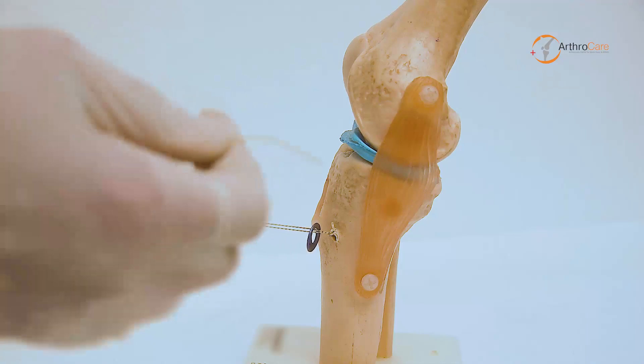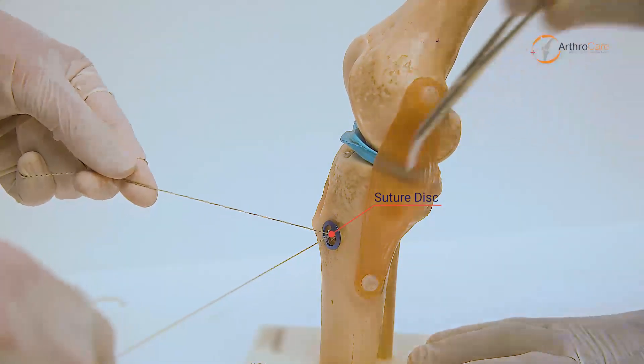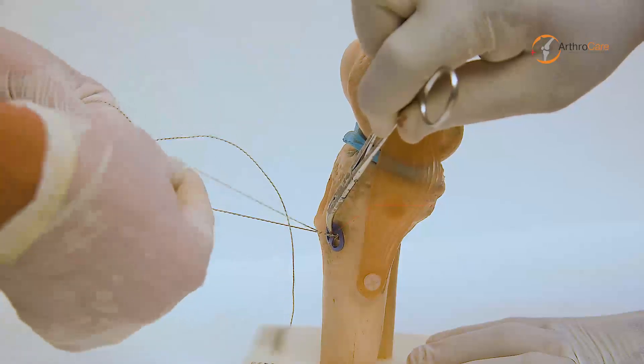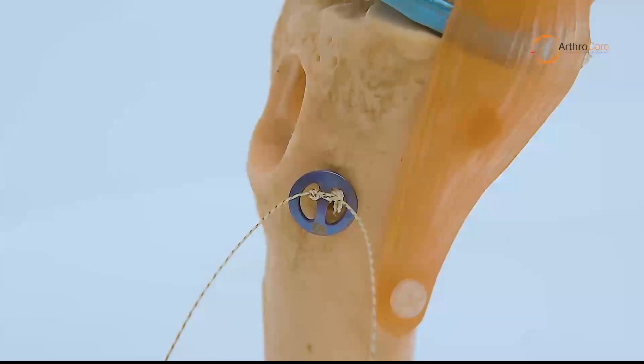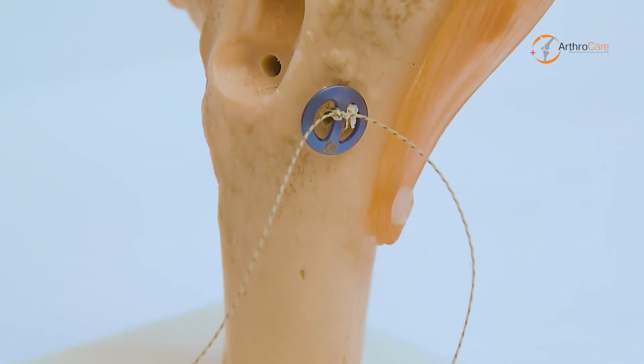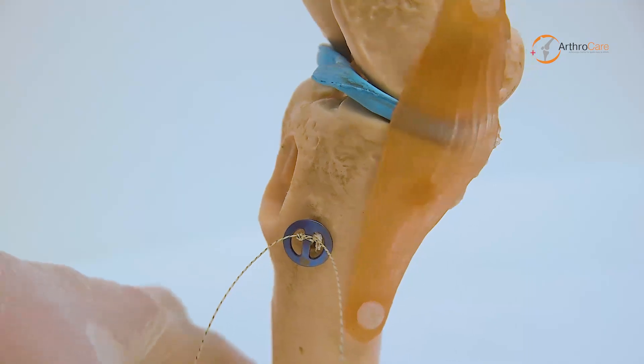Both fiber wire ends are tightened snugly over the suture disc to finalize the fixation of the PCL avulsed fragment. Here is the final fixation of the PCL avulsed fragment arthroscopically.